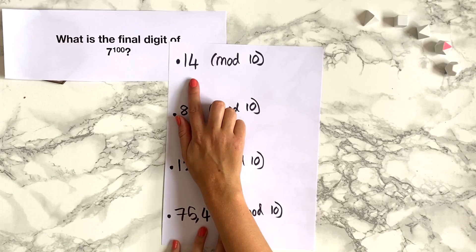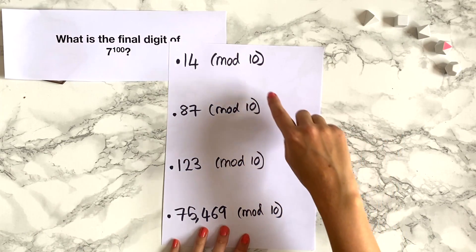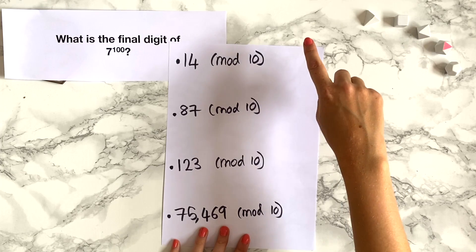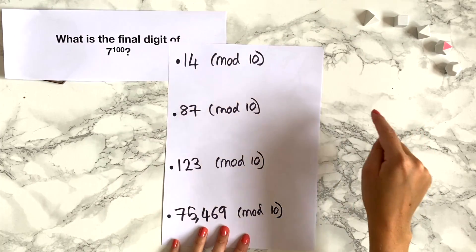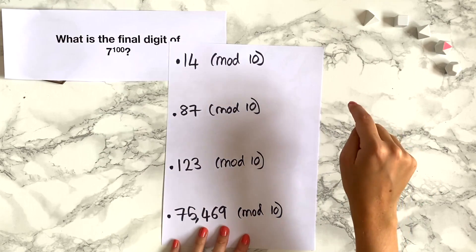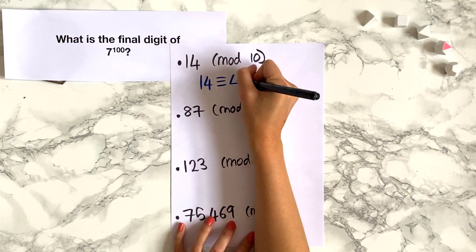So here we want to find 14 modulo 10. If you think about where 14 would appear on a 10 hour clock, well 10 would be at the top of the clock and then you have to count round 4 to get to 14, so 14 would be at 4 o'clock, so 14 is congruent to 4 modulo 10.